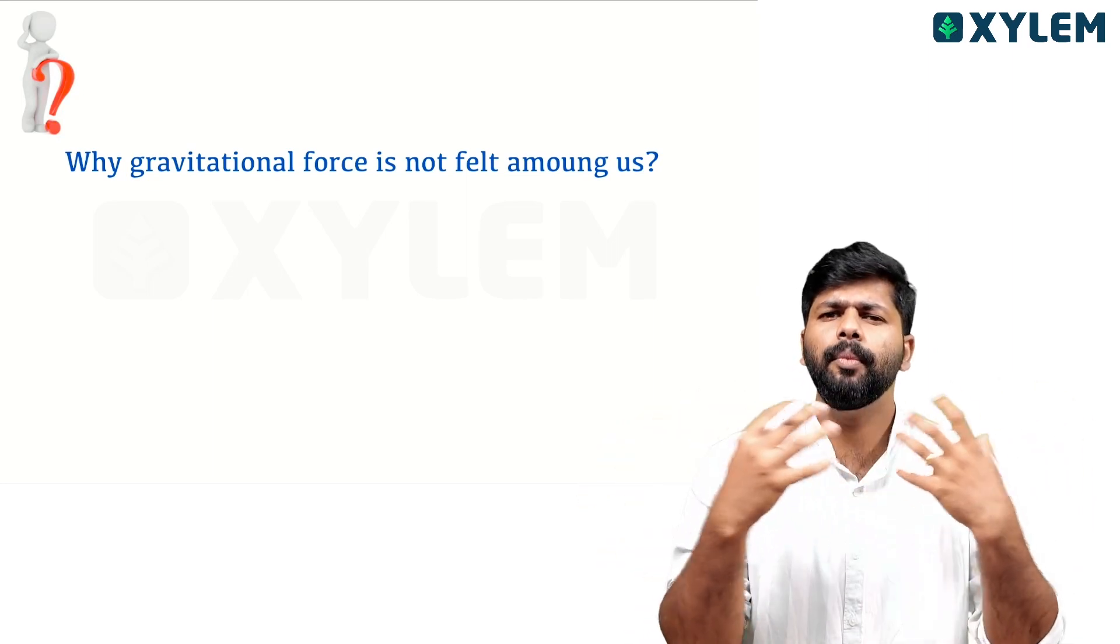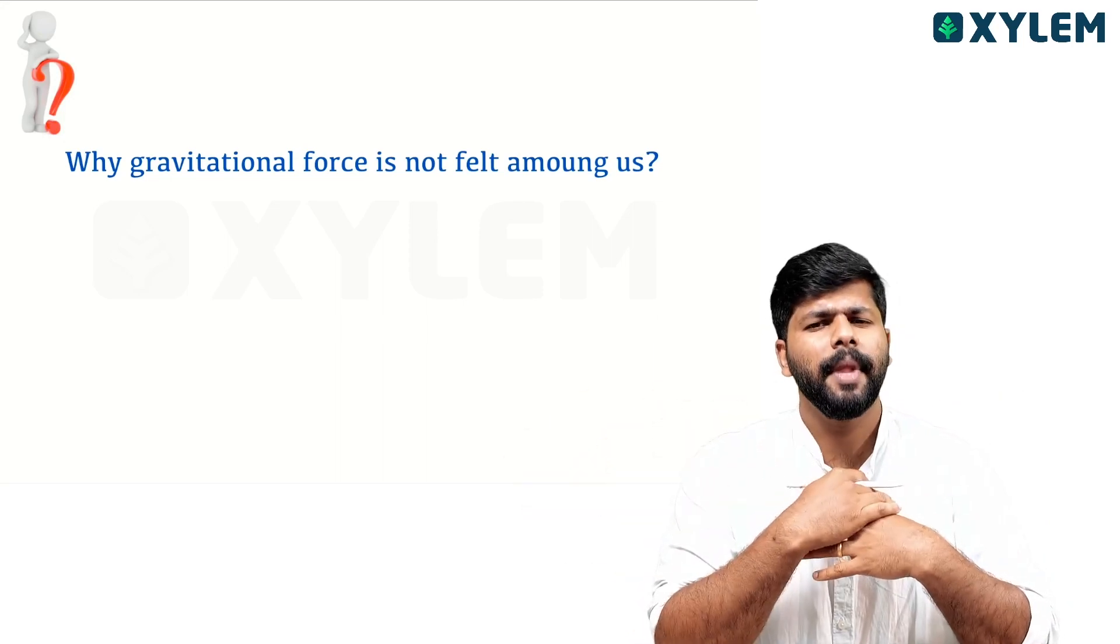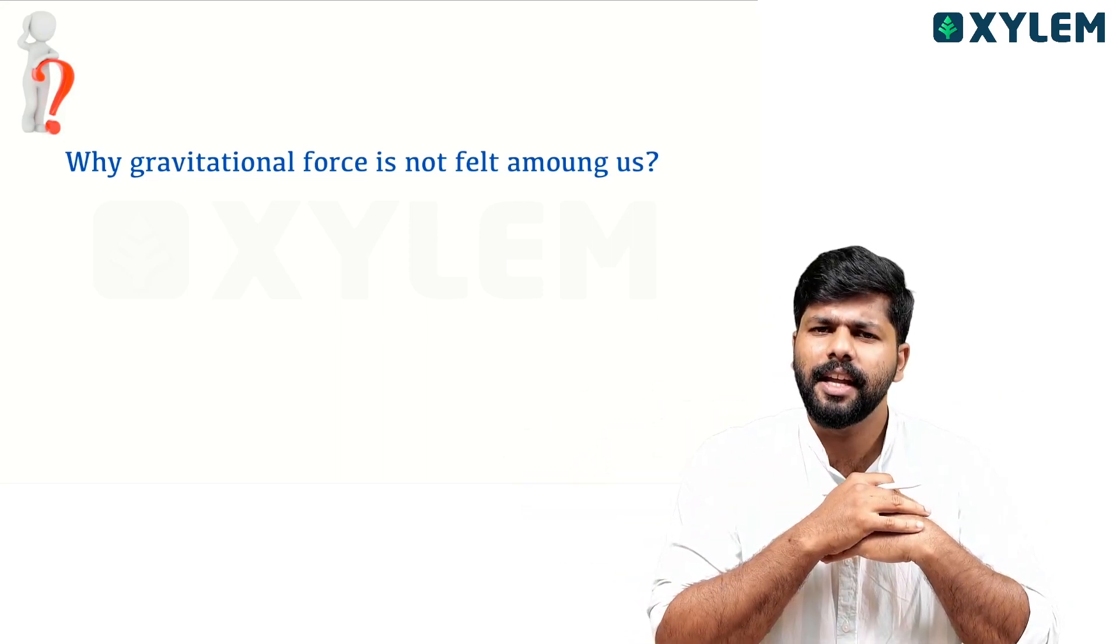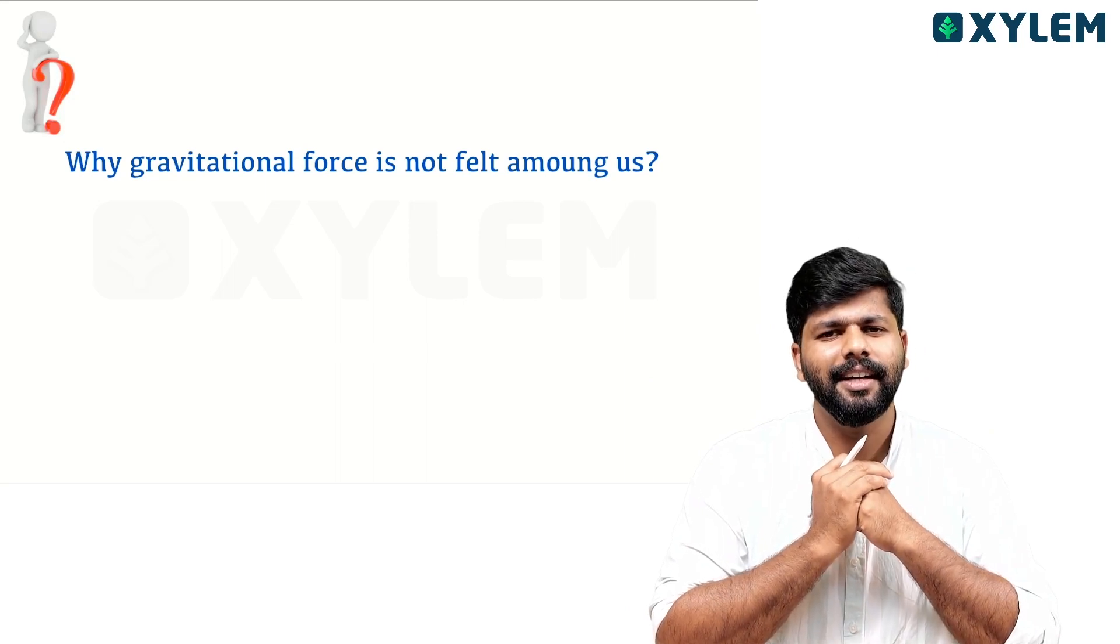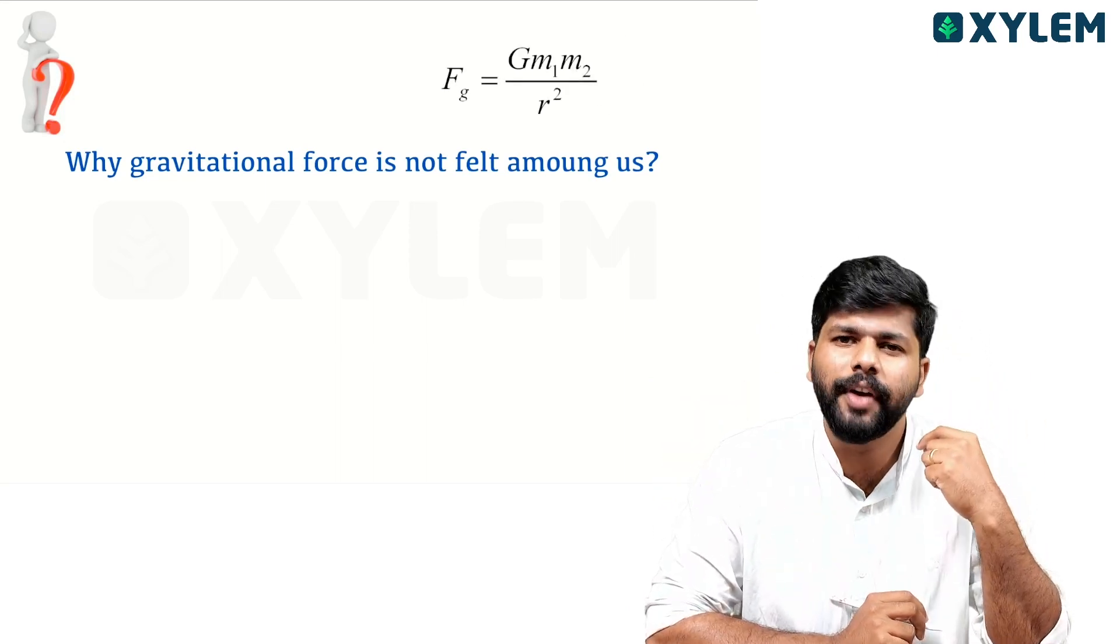We have two bodies in this universe. We have mass M1 and M2, and there is a separation between us. But we don't feel that force. The answer is very simple. This equation F equals G M1 M2 divided by R square.